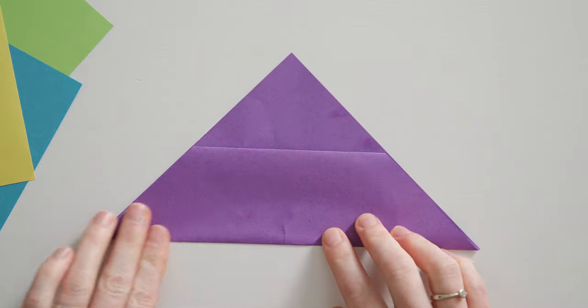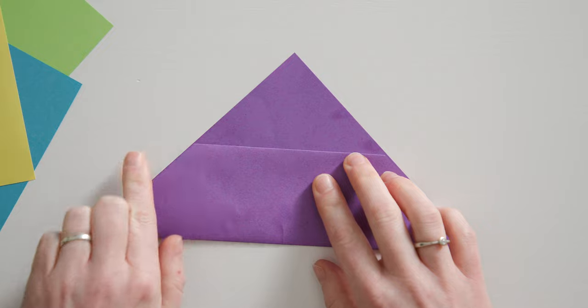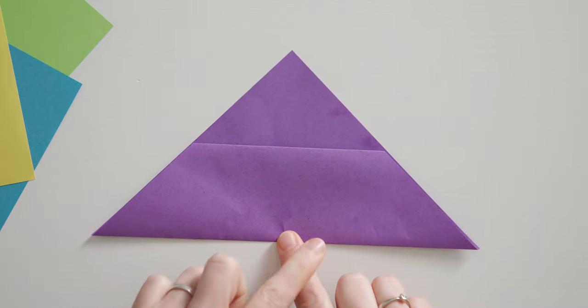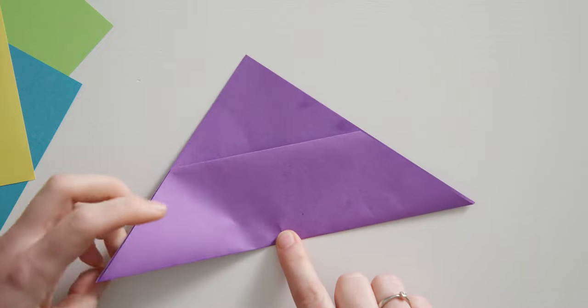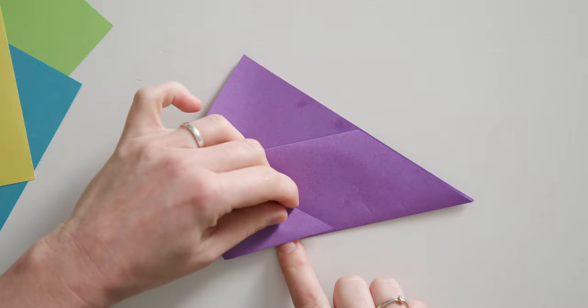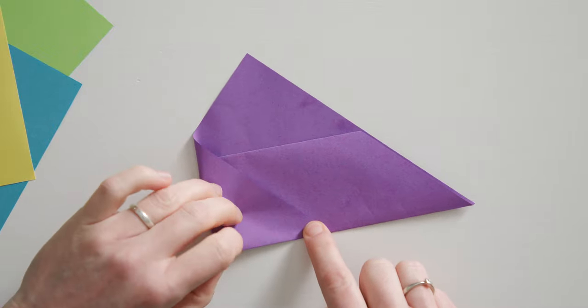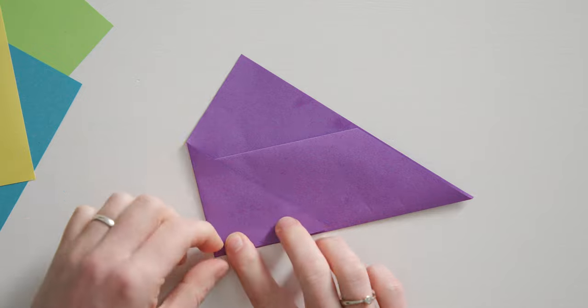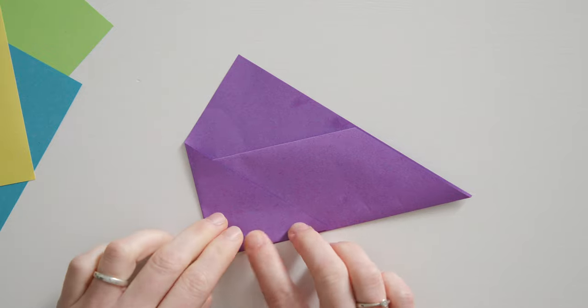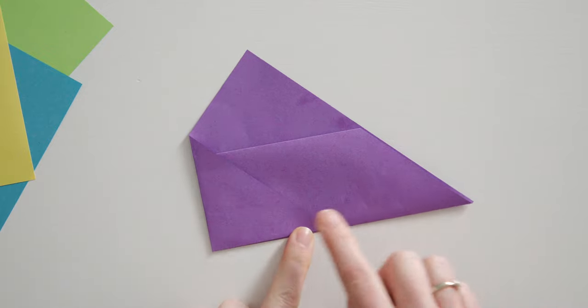You can then decide how wide you want your origami envelope to be. To do this, fold the left tip over to the other side of the paper as far as you like. Afterwards, fold the right tip to the left so that the envelope is as symmetrical as possible. You can simply place your gift card next to the paper to see how wide the envelope needs to be.